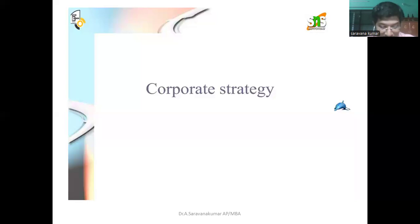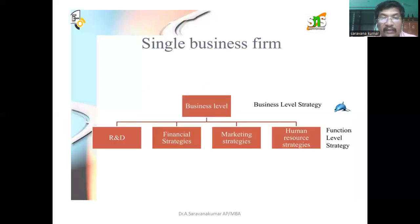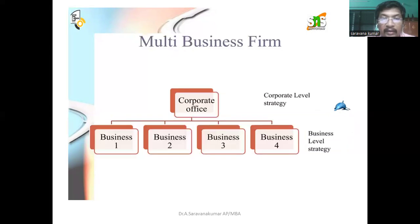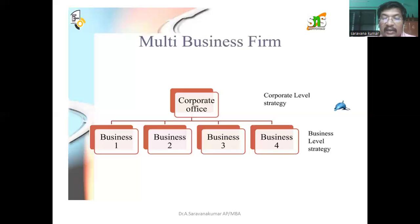Next, we are going to discuss corporate strategy. Corporate strategy involves a single business platform — you can see the picture. At the business level, there are research and development strategies, finance strategies, marketing strategies, human resource strategies, and functional level strategies. For a multi-business firm with two or more businesses, there is a corporate office with branches — that is a business level strategy.